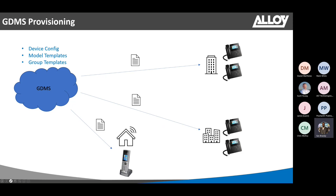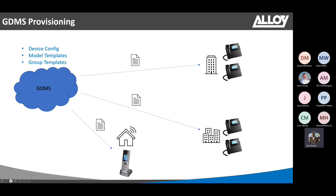There are three different types of configuration templates you can configure in Grandstream. The first one is device config, which is mainly for one particular MAC address — one particular handset that you want to provision.